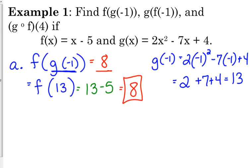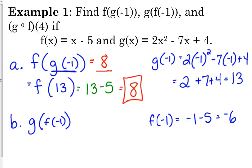Now, it's really important. You start on the inside and work your way out. Part b, we're just changing the order. Same original x value. We're changing the order. So we start by finding f of negative 1. So that's negative 1 minus 5, which is negative 6. This is why the order matters.